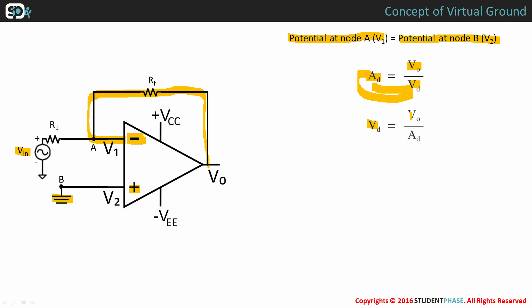VD is the differential input voltage V1 minus V2. And we all know that the gain of an ideal op amp is infinite. Equating these in the equation, we get V1 minus V2 equals V0 divided by infinity. Anything divided by infinity equals zero.